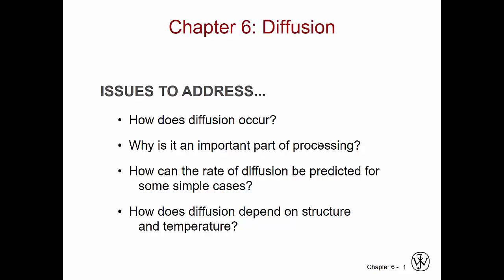Processing using diffusion can affect the properties, and therefore the performance of the materials that are involved. Can we predict the rate for some simple cases, and how does that diffusion depend on the structure that we are diffusing through, as well as the material that is doing the diffusing, and also, what's the effect of temperature?